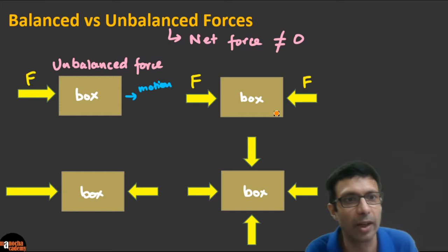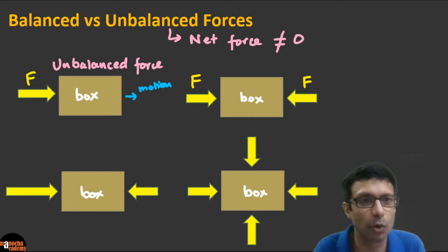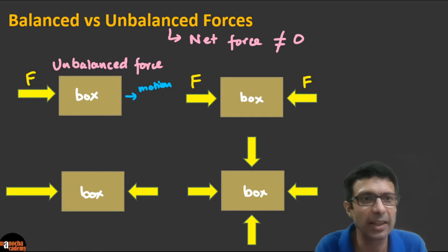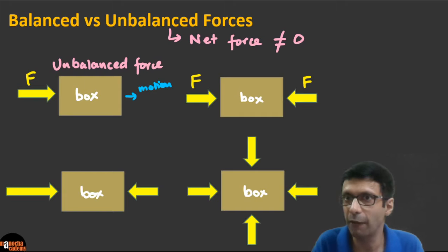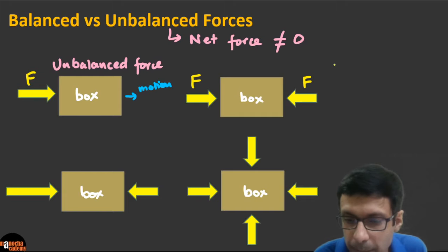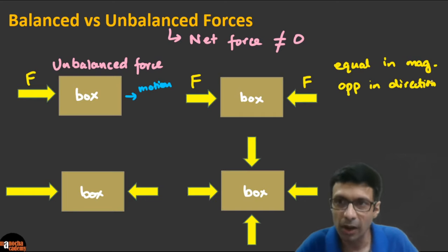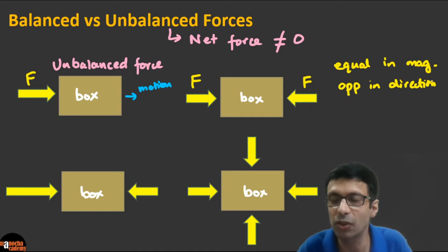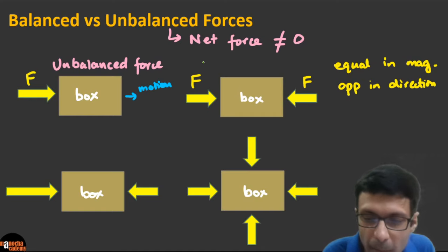Now consider the same box with two equal and opposite forces — one towards the east and one towards the west. Since they're equal in magnitude but opposite in direction, they cancel each other out. You can try this yourself by pushing a book from both sides with equal force — it won't move. This is an example of balanced force.